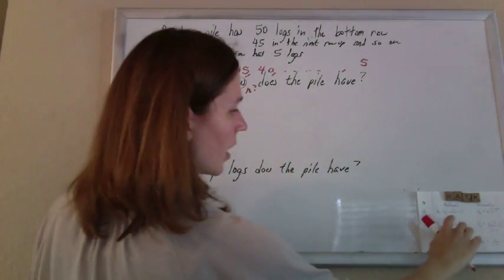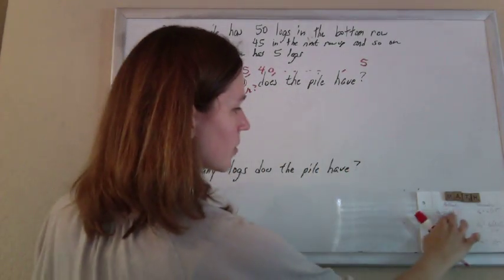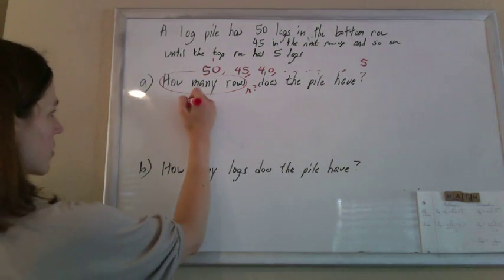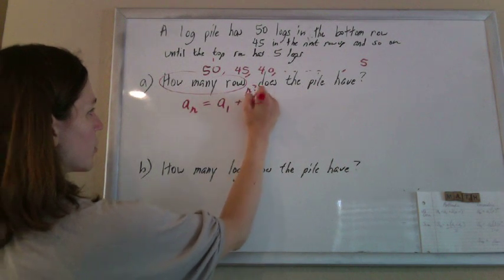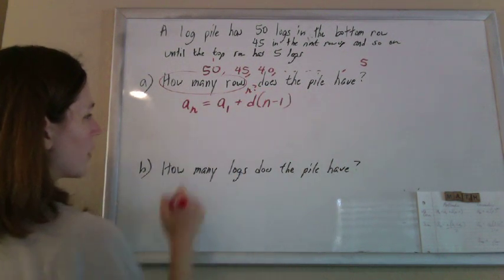So arithmetic, nothing about a sum yet, so we're using the formula for the nth term of an arithmetic sequence. The nth term we can get by taking the first term and adding that common difference, n minus 1 times.